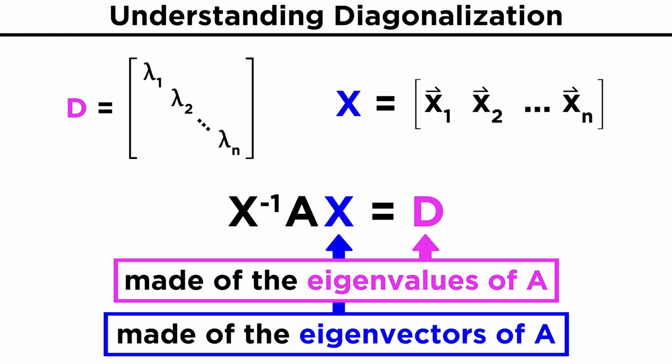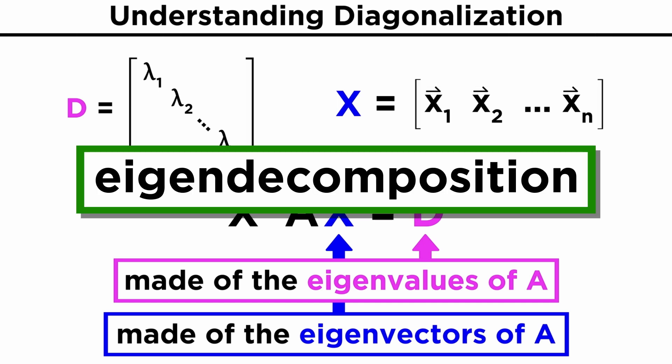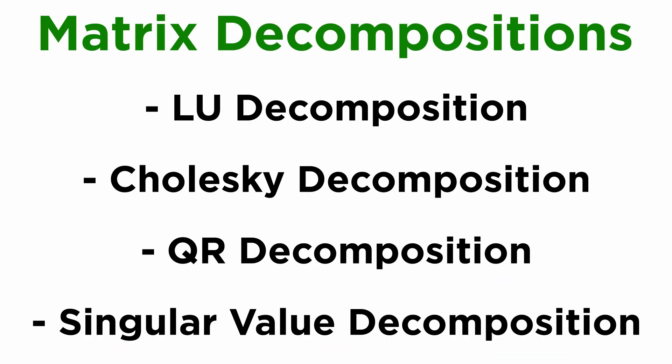Previously we saw how the eigenvalues and eigenvectors of a matrix can be used to diagonalize the matrix, which means that we express the matrix as a product of simpler matrices with a given structure. This is called the eigendecomposition, and it's only one type of a matrix decomposition. There are four more matrix decompositions that we should be aware of, so let's take a look at them one at a time.